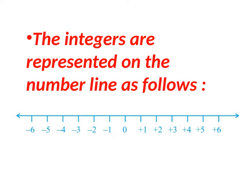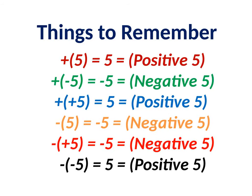We represent integers on the number line like this: 0 is in the middle. Zero's right hand side has positive numbers, zero's left hand side has negative numbers. These are the points we need to remember about integers.